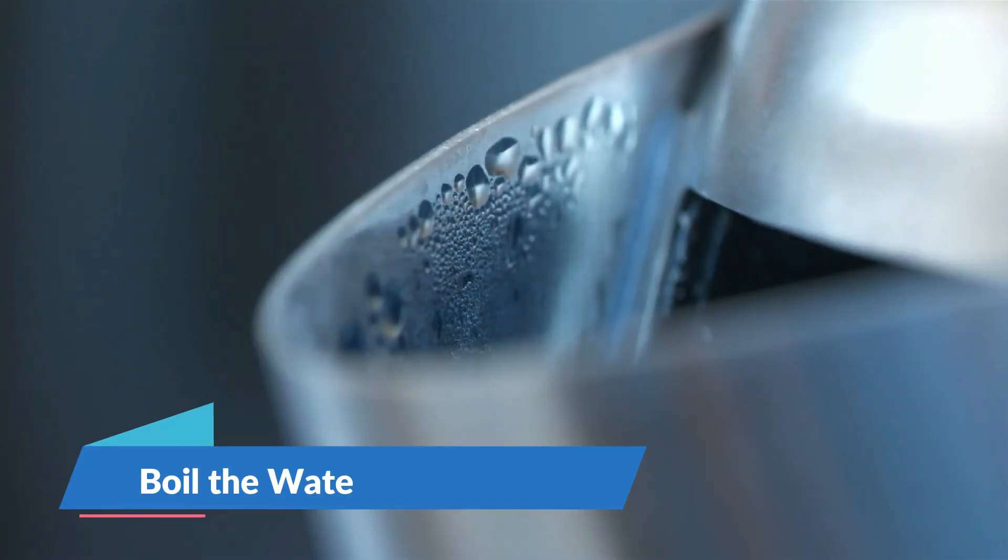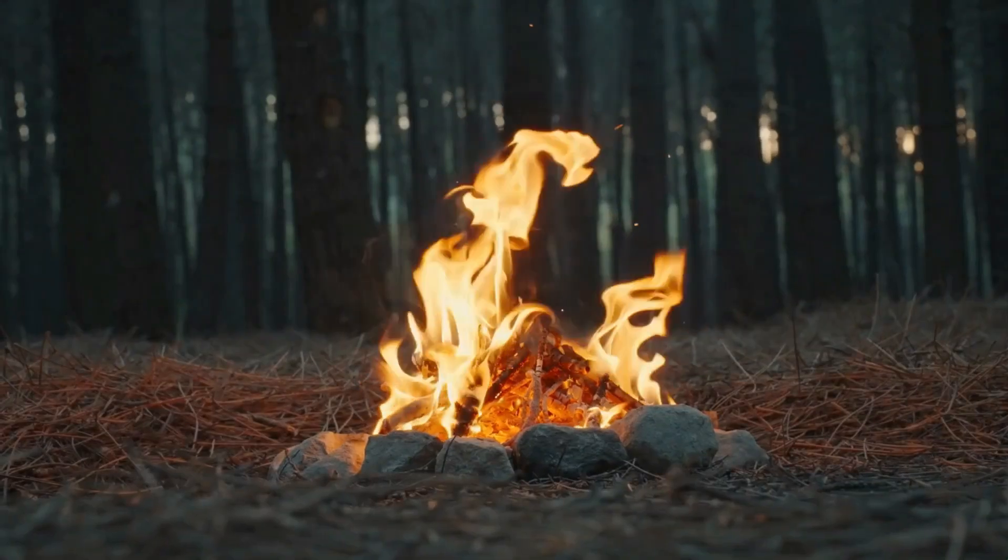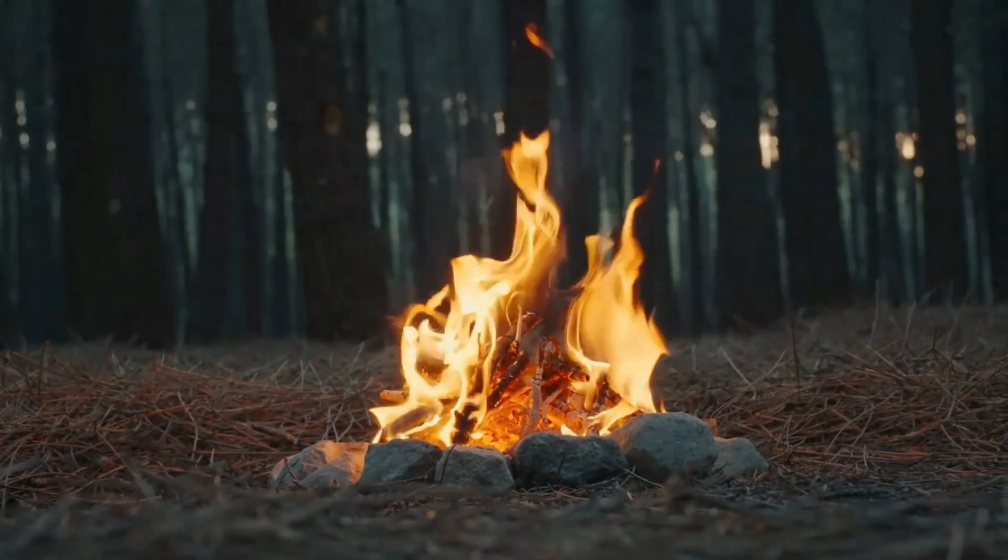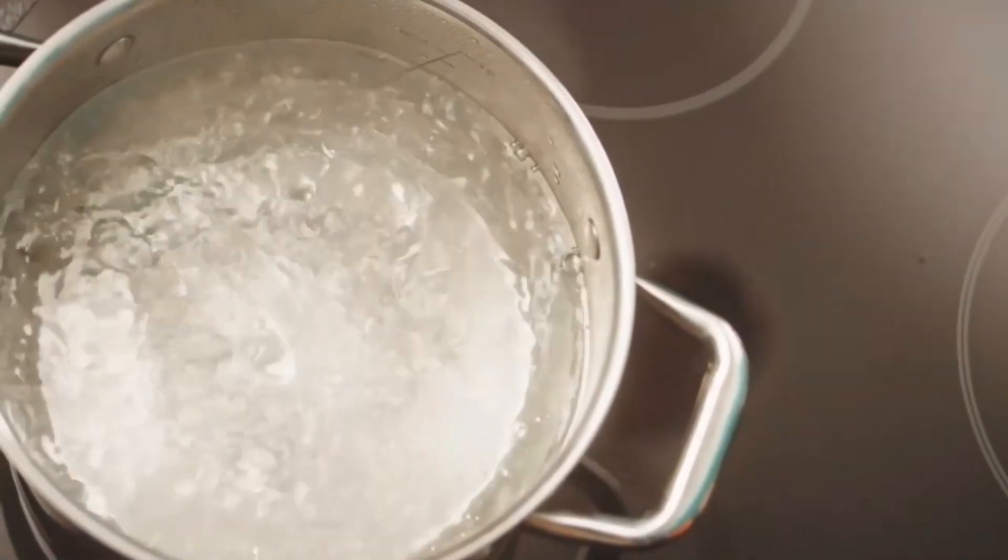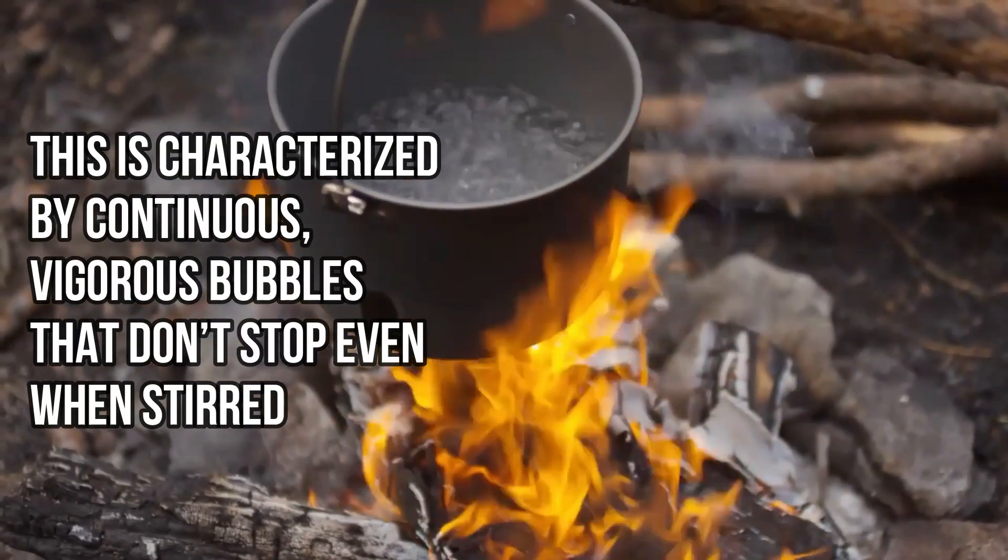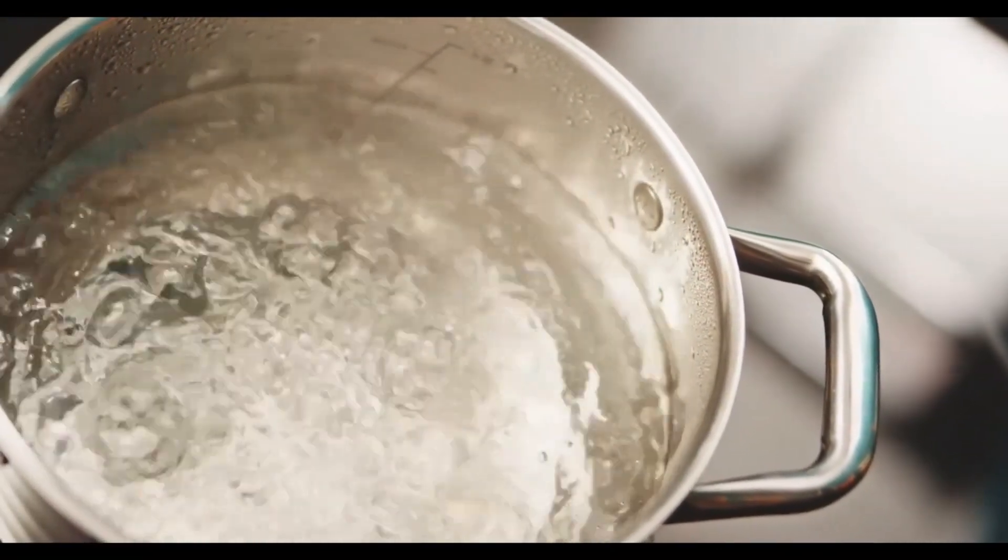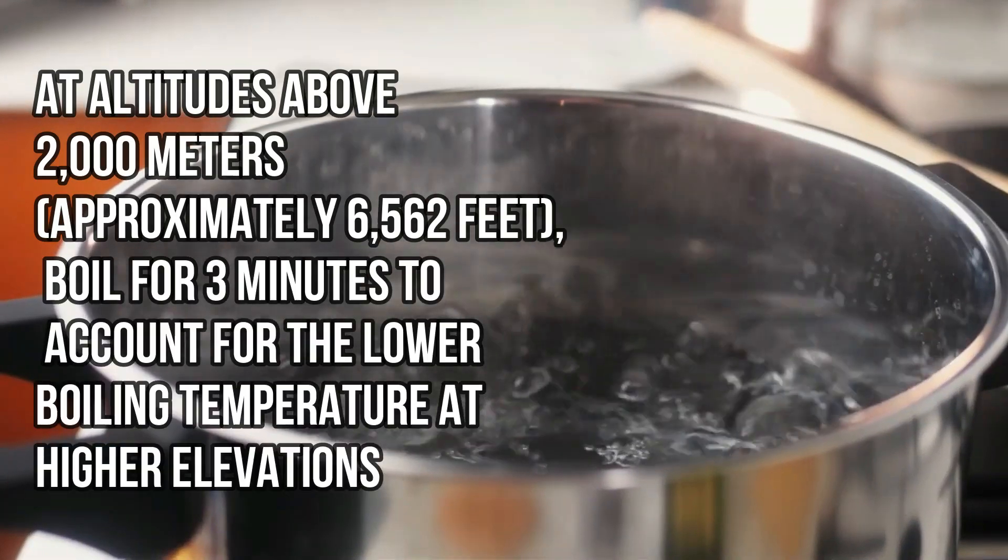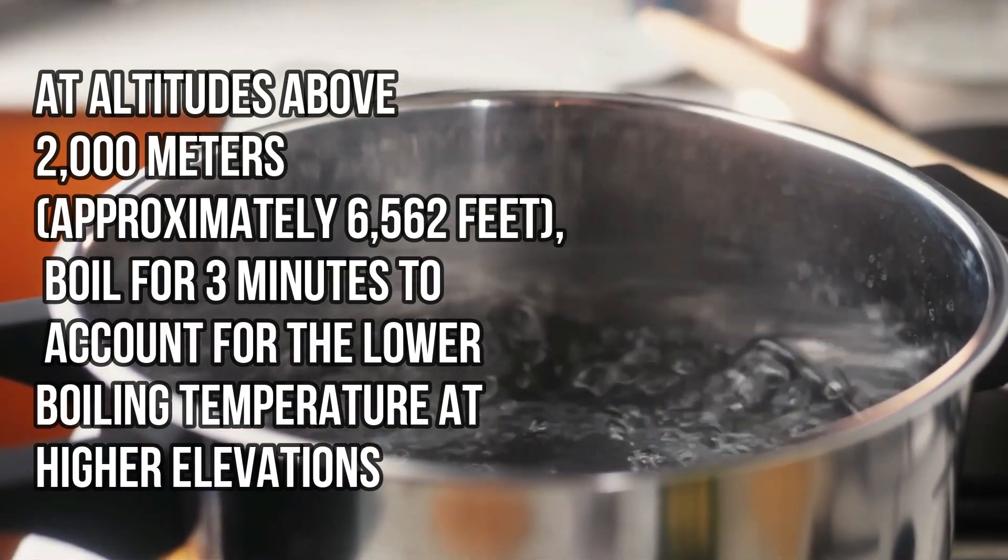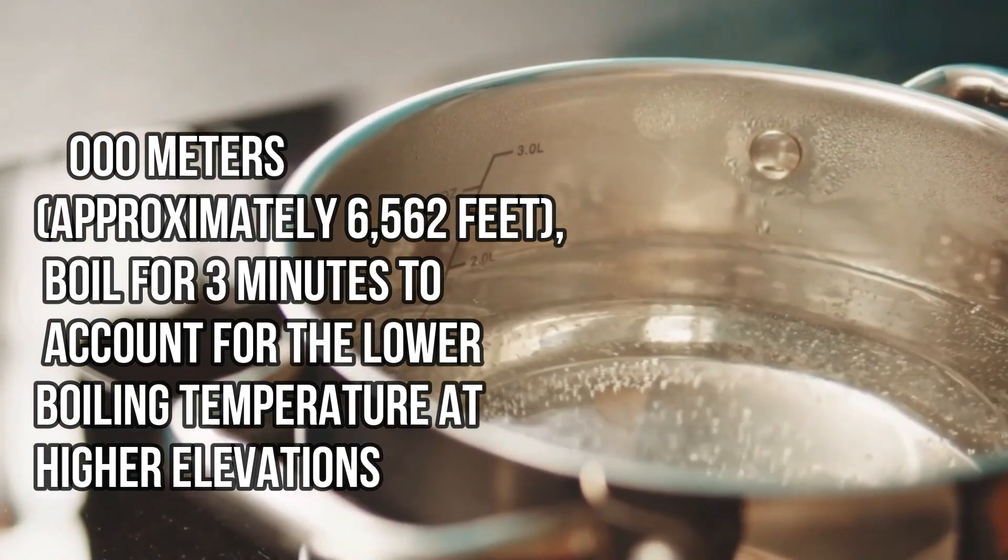Step 3: Boil the water. Use a heat source: Place the container on a stove or another reliable heat source. If outdoors, you can use a portable stove or build a fire. Bring to a rolling boil: Heat the water until it reaches a rolling boil. This is characterized by continuous, vigorous bubbles that don't stop even when stirred. Boiling time: Once it reaches a rolling boil, let it boil for at least one minute. At altitudes above 2,000 meters, approximately 6,562 feet, boil for 3 minutes to account for the lower boiling temperature at higher elevations.